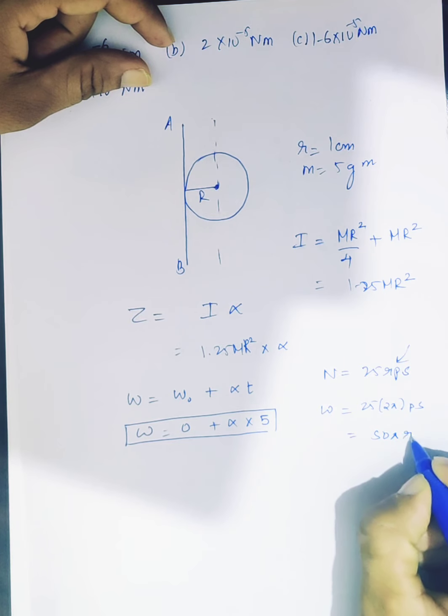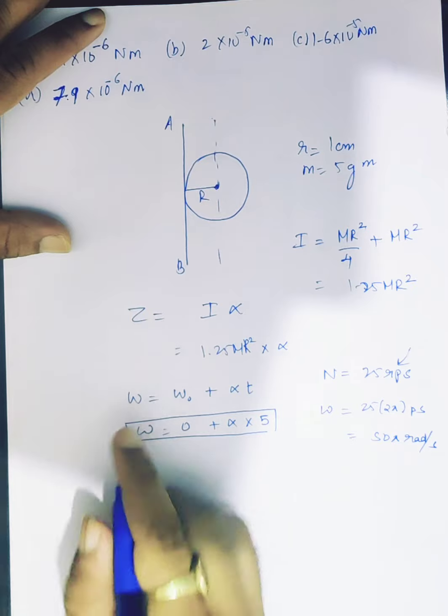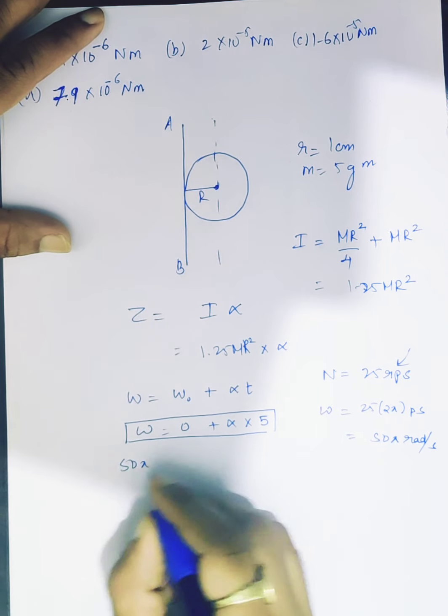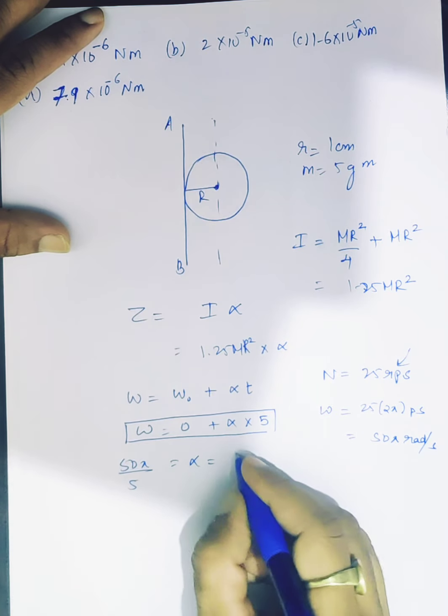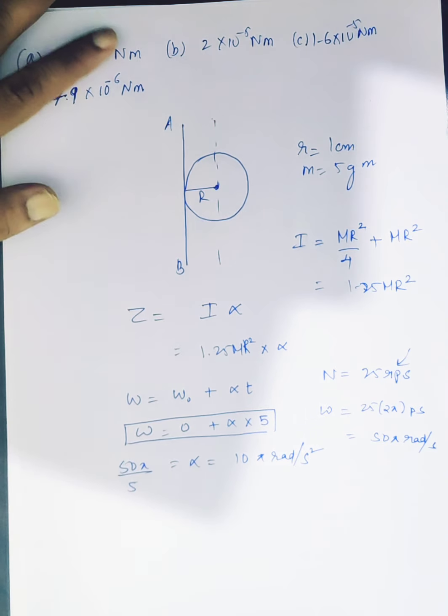Omega equals omega naught plus alpha T. Radians per second, one rotation is 2 pi radians, so we have 50 pi upon 5 equals alpha. So we have 10 pi radians per second square. That is the alpha.